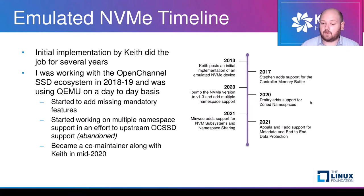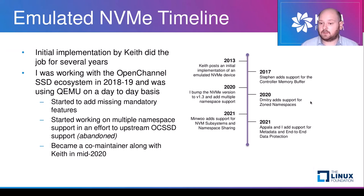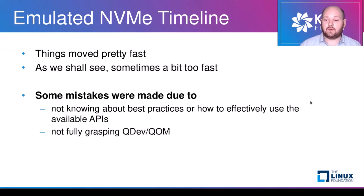Because I started contributing a lot from 2019 onwards, I became a co-maintainer in mid-2020. One of the things I added was bumping the device version to implement NVMe v1.4, and I added multiple namespace support. In 2020 we also got support for zoned namespaces. Mingwu added subsystem namespace sharing support, and we added metadata and end-to-end data protection — just to mention a few major features added recently. Things moved pretty fast, and sometimes a bit too fast — there were some mistakes made, and we'll be talking about one of them specifically today.